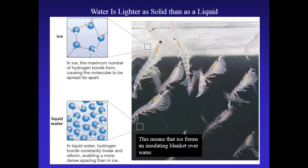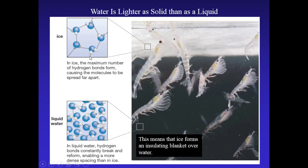Another property of water is that it is actually lighter as a solid than as a liquid, which is really uncommon. This means that ice acts as an insulator over water, allowing living things to survive in Arctic water. In ice, the maximum number of hydrogen bonds form, causing molecules to spread further apart. In liquid water, hydrogen bonds are constantly breaking and reforming, enabling a denser mass of molecules to exist compared to solid ice — you can actually see this density difference in a visual comparison.